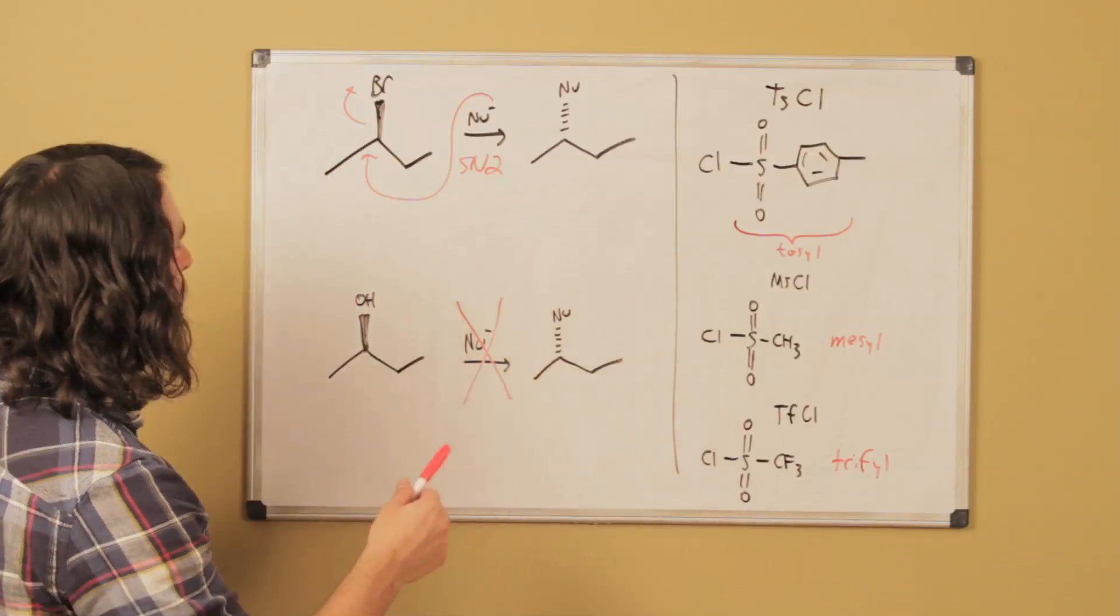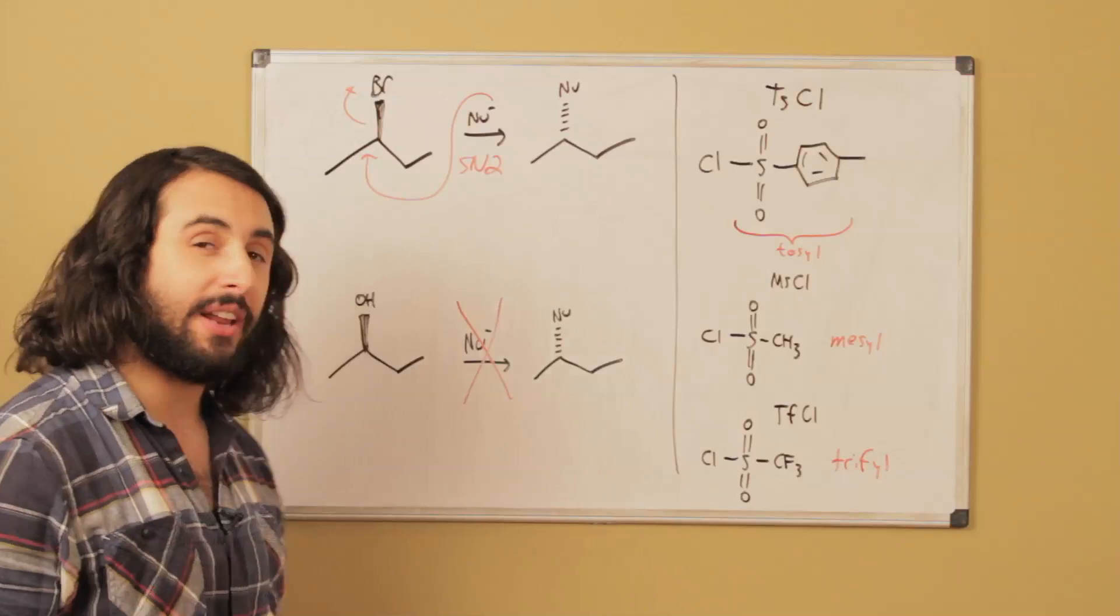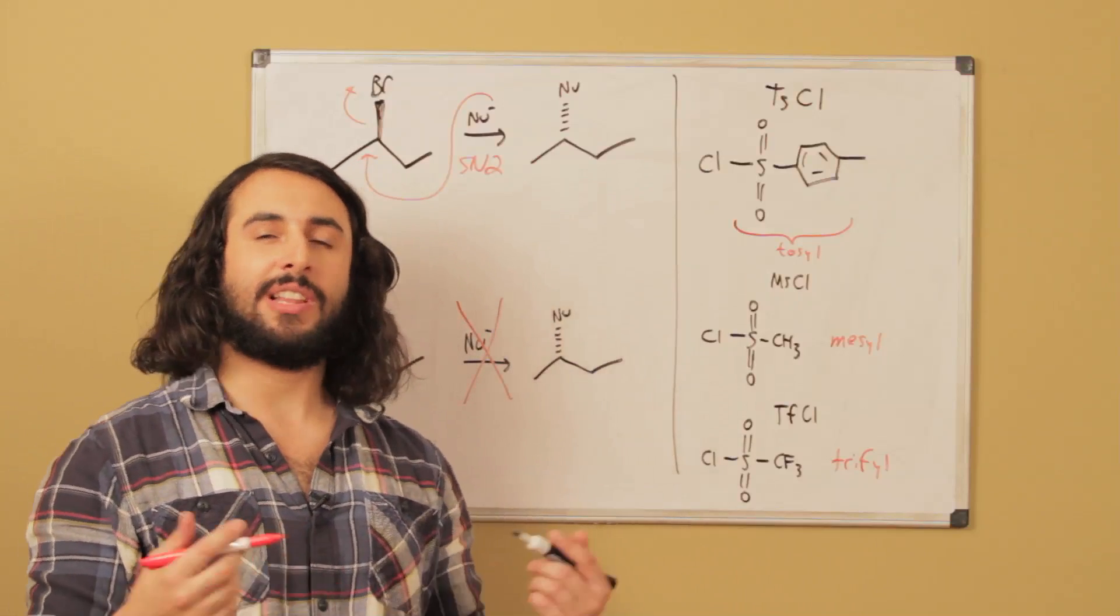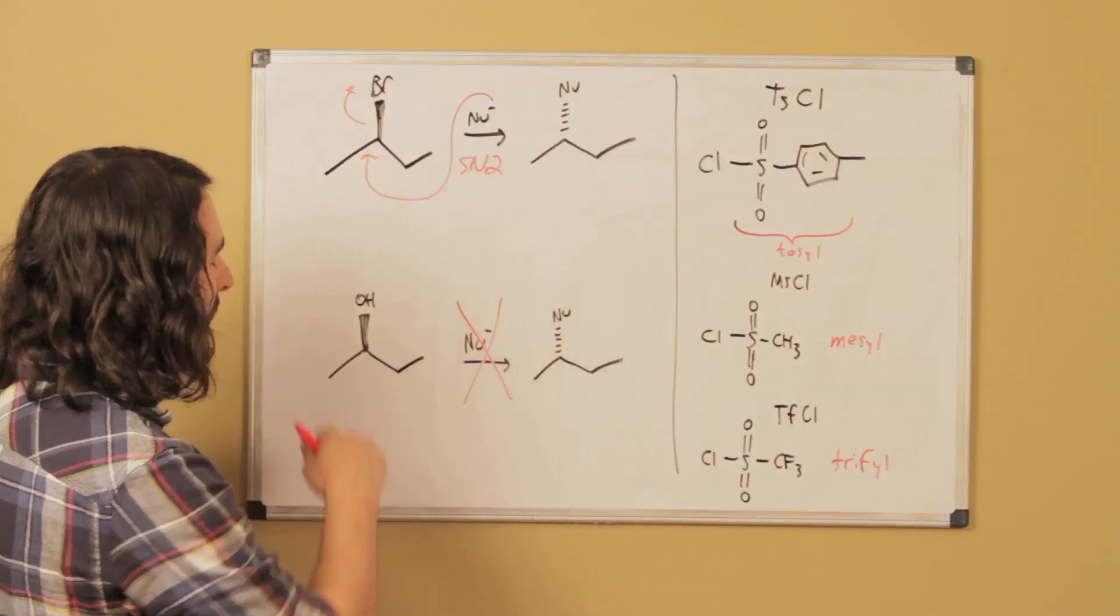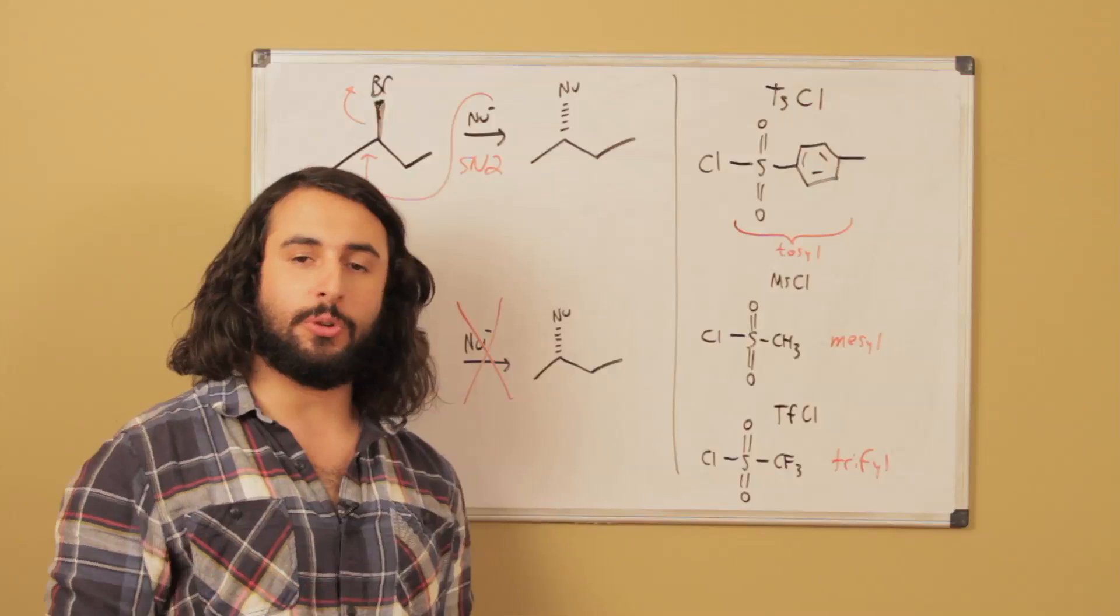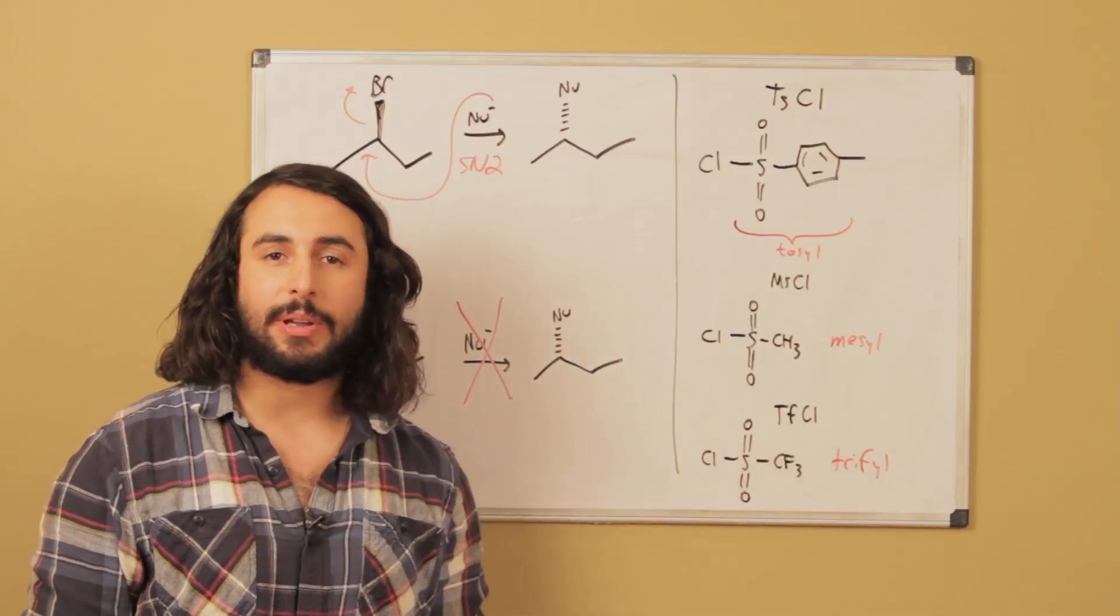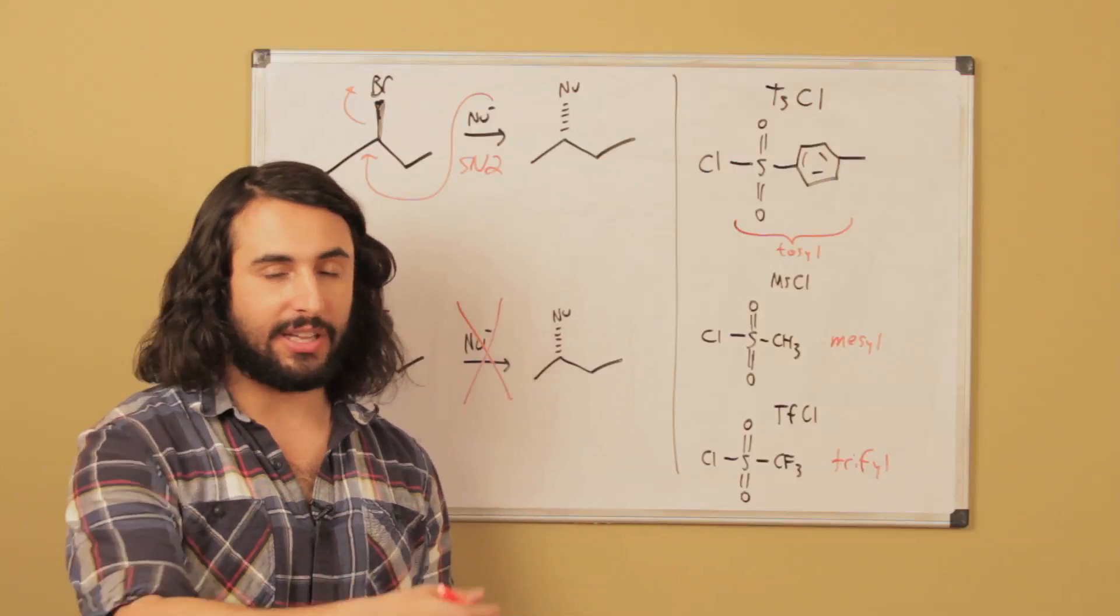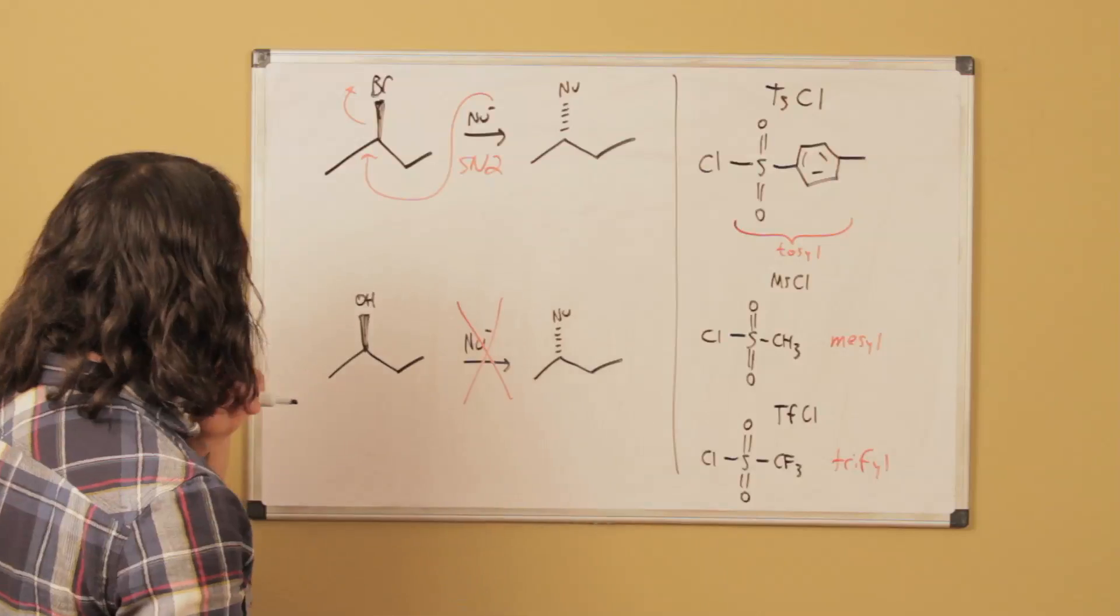We know that we could protonate that with some acid, have it try to leave. We could try to do an SN1 reaction, but there's a lot of problems there. Number one, you're going to get competing elimination reactions. You're going to have a mess in your product mixture. And number two, SN1 reactions are not stereospecific, so you're going to get a racemic mixture. And if you have a lot of stereospecific steps on your pathway, it's not going to be very good.